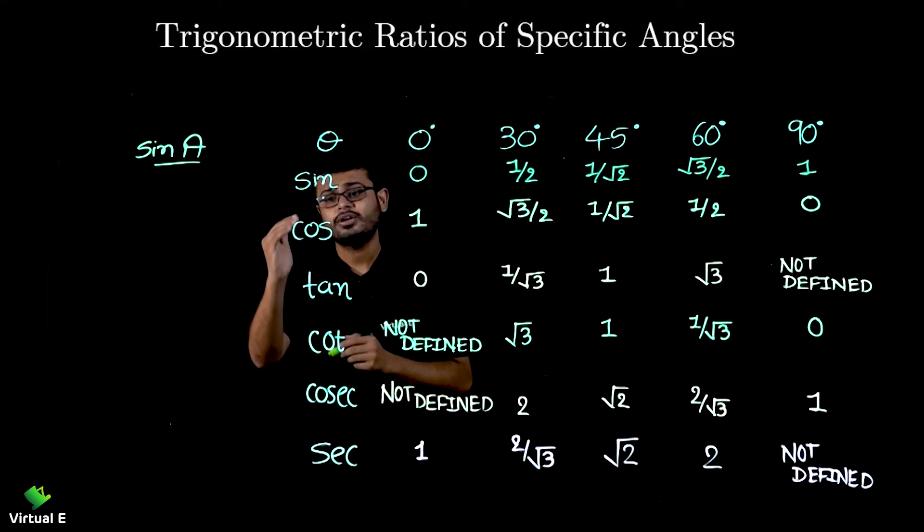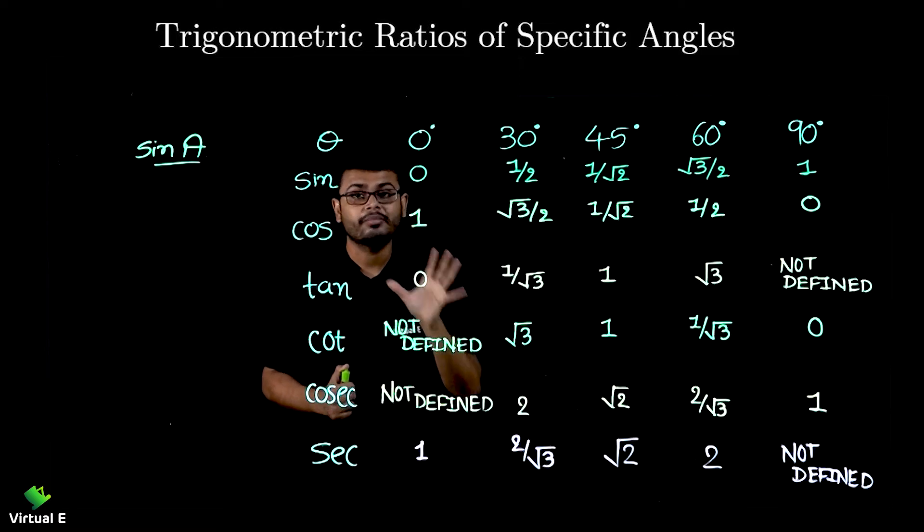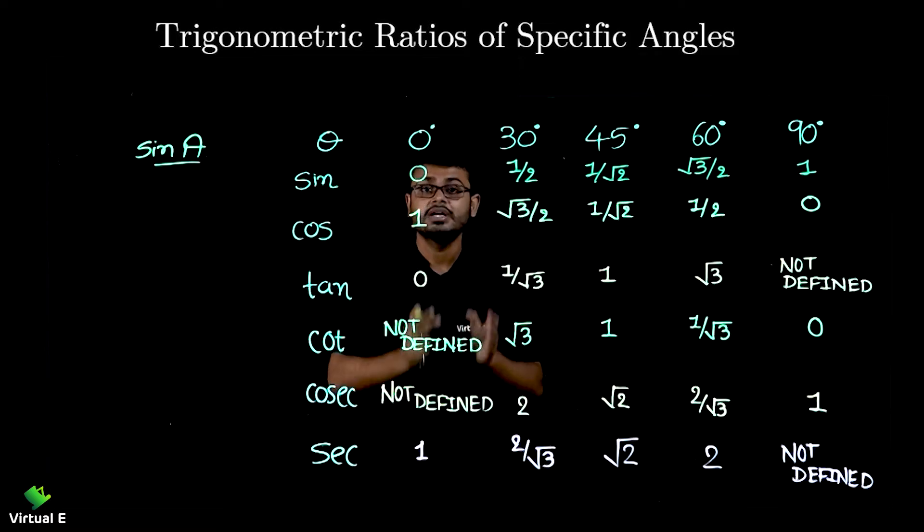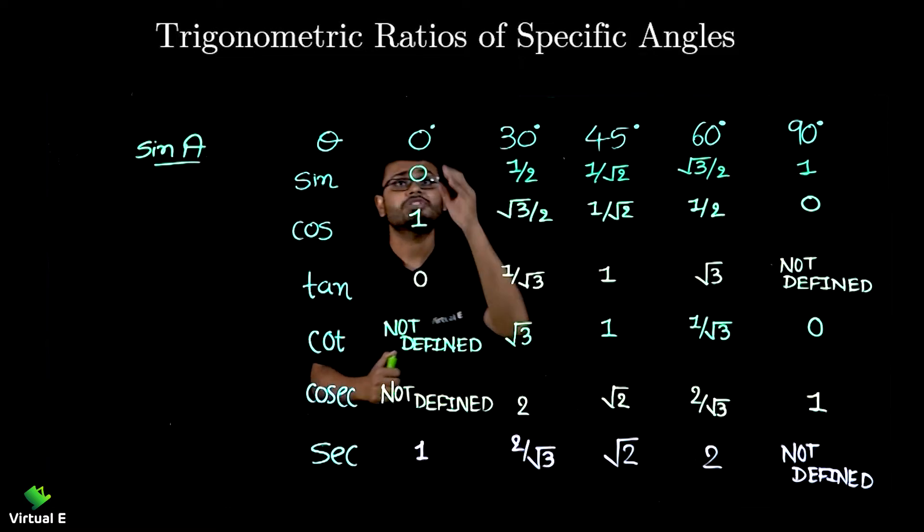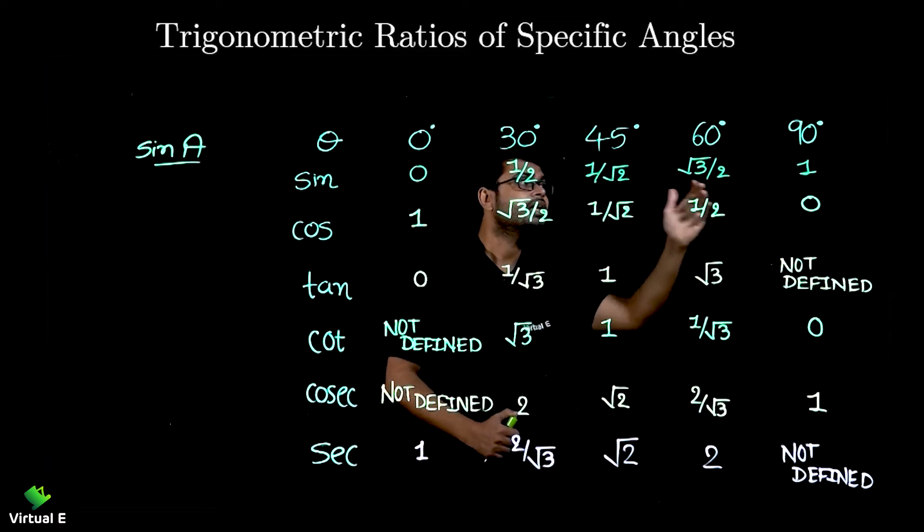We have six ratios: sine, cos, tan, cot, cosec, sec. And there are known values that we need to remember which are 0 degree, 30 degree, 45 degree, 60 degree, and 90 degree.